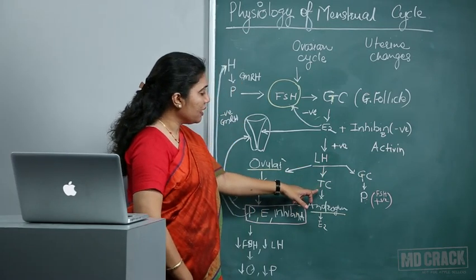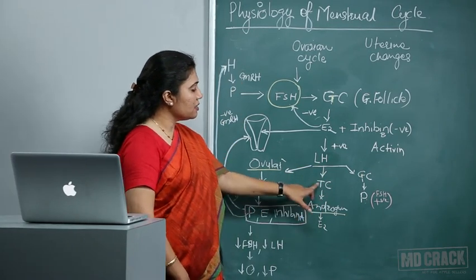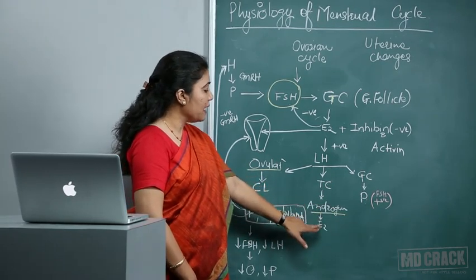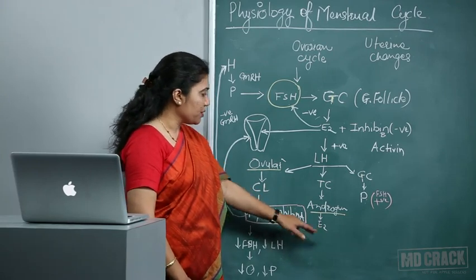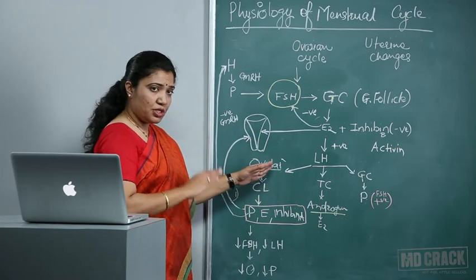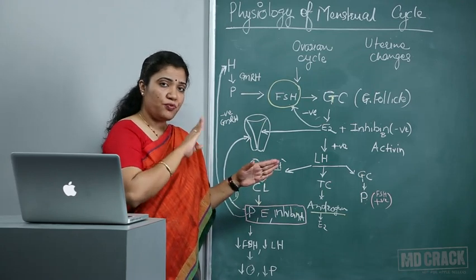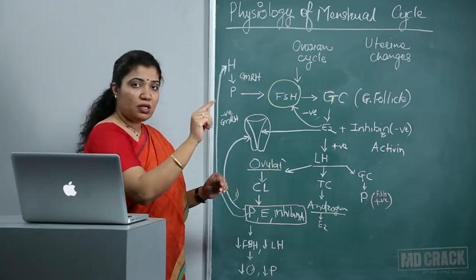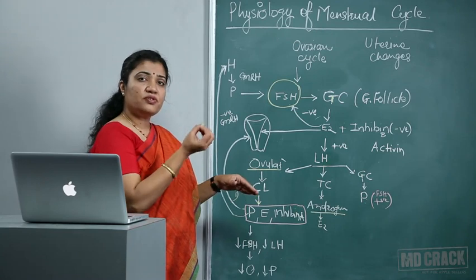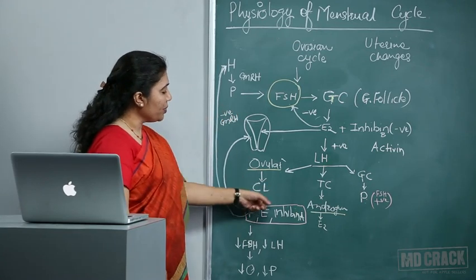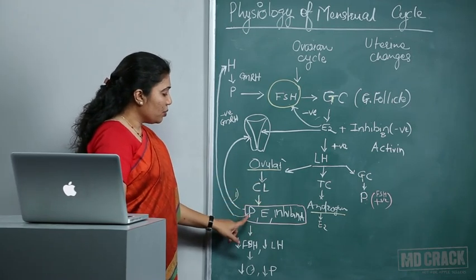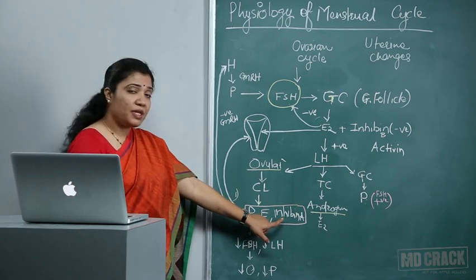LH also acts on theca cells, releasing androstenedione and testosterone — androgens — which are aromatized to form estrogen. As LH gradually increases, there is a surge 32 to 36 hours before ovulation, then the LH peak. Ten to 12 hours after the LH peak there is ovulation — release of the ovum from the ovary — and formation of the corpus luteum. The corpus luteum keeps secreting progesterone, estrogen, and inhibin A.